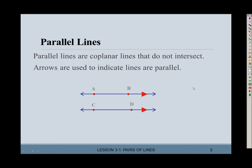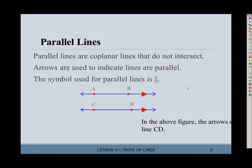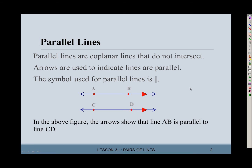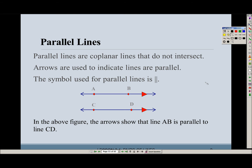If you had a second set of parallel lines in the same picture, then it would get a double arrow. The symbol for parallel is this double line. And in the figure above, the arrows show that line AB is parallel to line CD. With symbols, we would write that as: line AB is parallel to line CD.